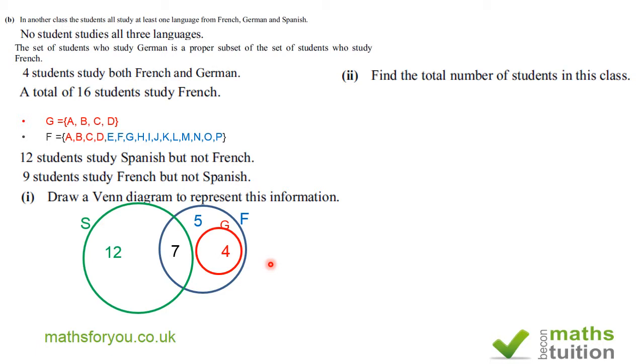Section B says, find the total number of students in this class. Now, obviously, that's going to be twelve plus seven plus five plus four, and that gives us twenty-eight students.